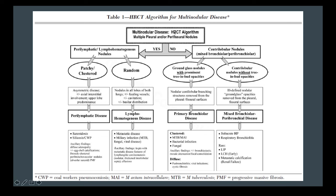This chart, taken from an article in CHEST in 2006 (linked in the description), summarizes the diagnostic approach. For multinodular disease, first ask: are nodules touching the pleura or fissures and clustered along them? If yes, that's perilymphatic — think sarcoid, silicosis, and coal workers'. If they're not clustered, it's probably random — think metastatic disease or miliary infection. If they spare the pleura and fissures, ask whether you see tree-and-bud, which points to infection. Without tree-and-bud, expand the differential to include subacute hypersensitivity pneumonitis and respiratory bronchiolitis.